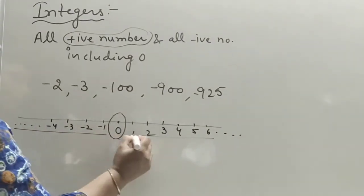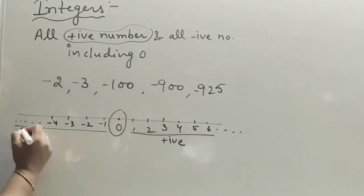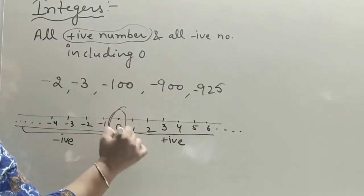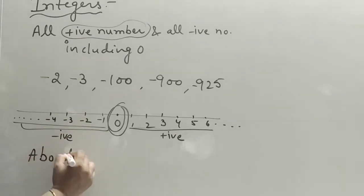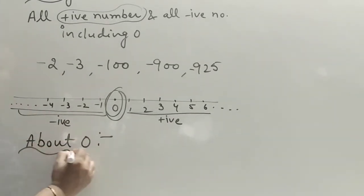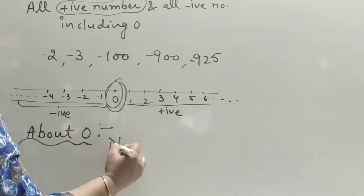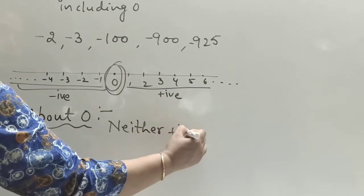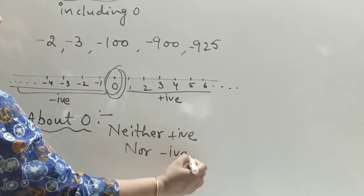Now let's talk about zero. What is zero? Zero is neither negative nor positive — neither positive nor negative.